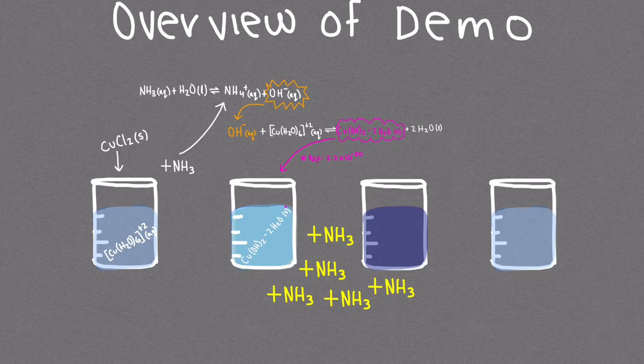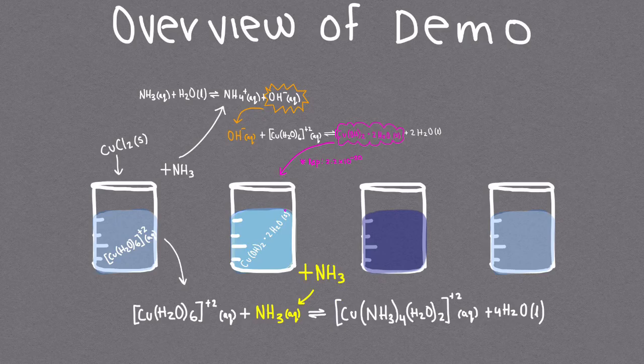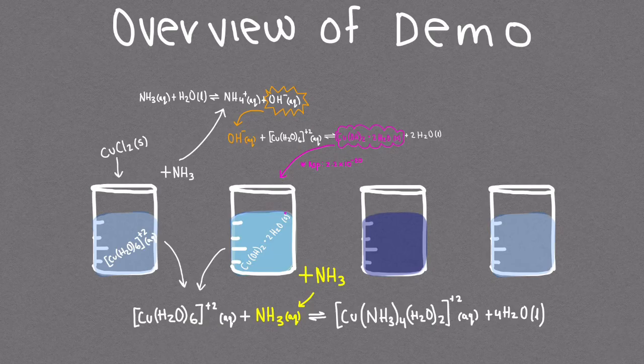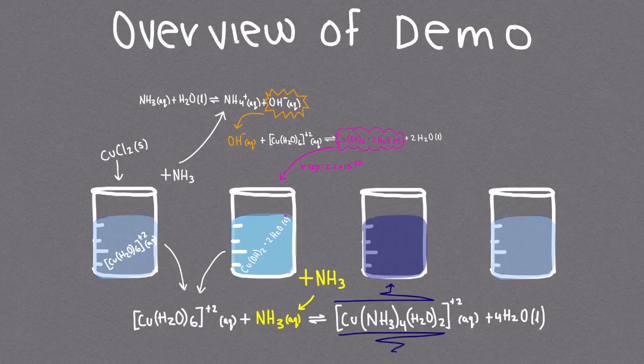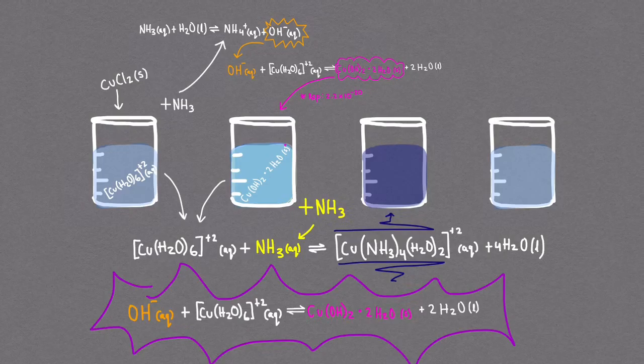As more ammonia is added an excess of NH3 forms reacting with the original complex ion from the first solution which is still present after the copper hydroxide has precipitated out. These form a dark blue copper ammonia complex Cu(NH3)4 plus 2. As this new dark blue ion forms the precipitate disappears.